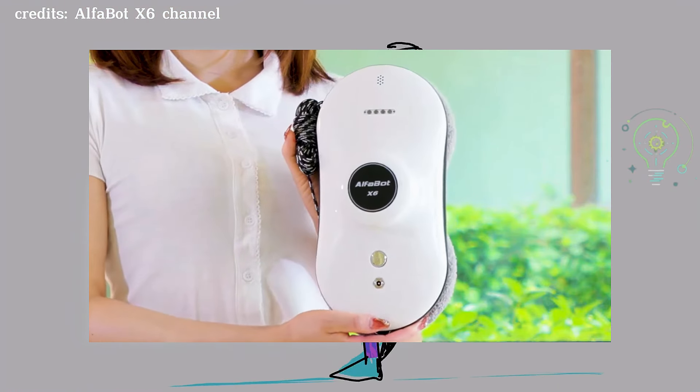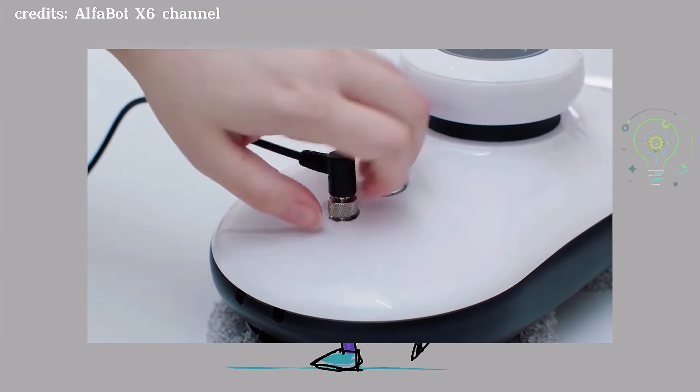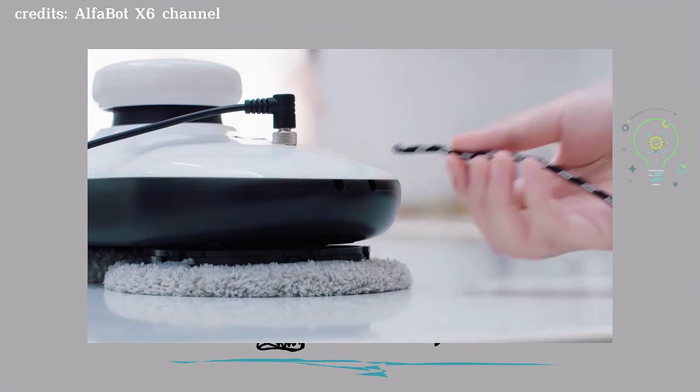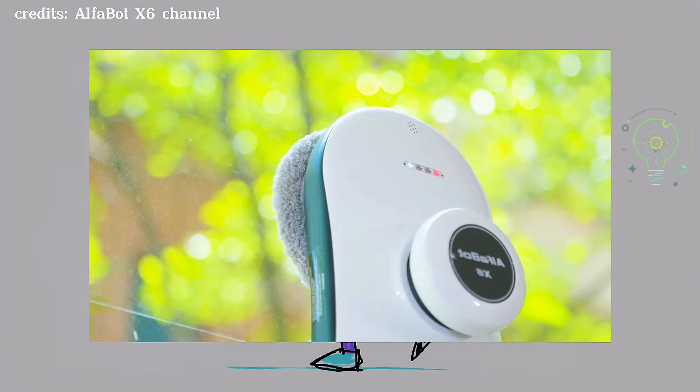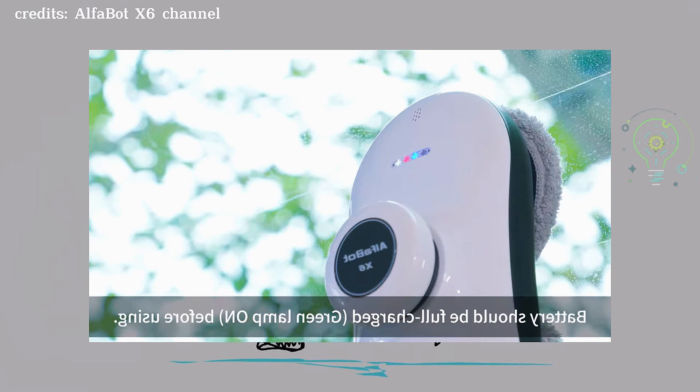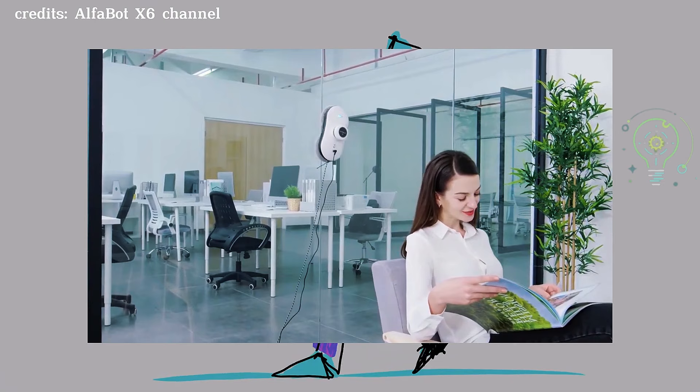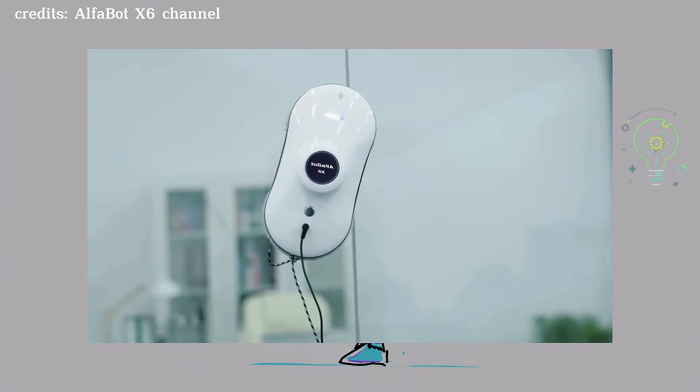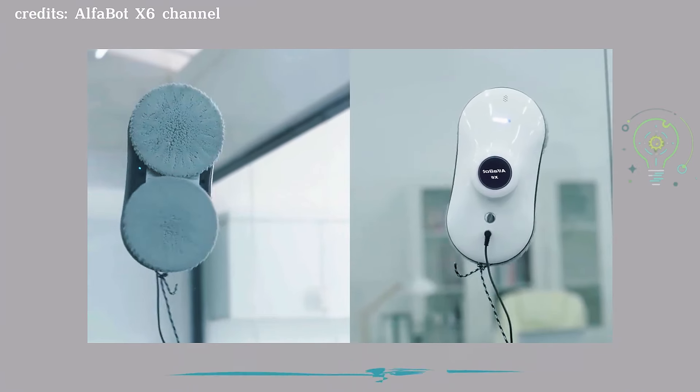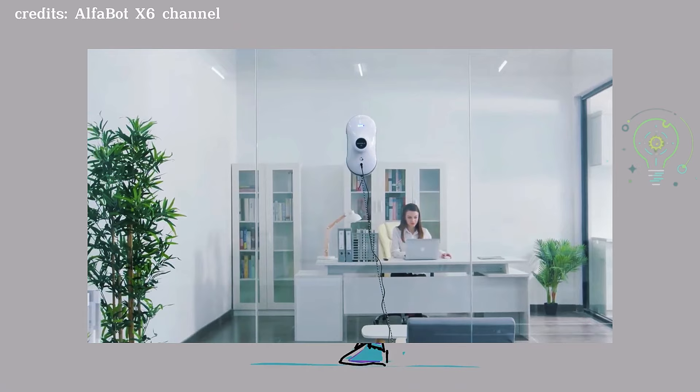Number 9: Alphabot X6. Tired of sweeping and vacuuming your home? The Alphabot X6 is a robot vacuum that does it all for you automatically. With smart sensors, it maps your space and cleans every corner, avoiding obstacles and returning to its charging base on its own. But it doesn't stop there. The Alphabot X6 has different cleaning modes, from vacuuming to scrubbing floors, keeping your home spotless without you lifting a finger. Ideal for anyone who wants to streamline their cleaning routine.